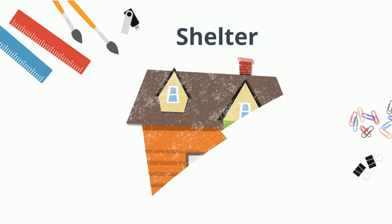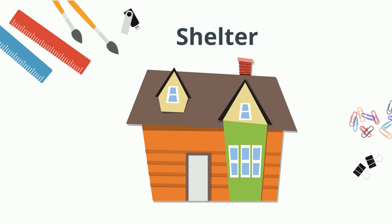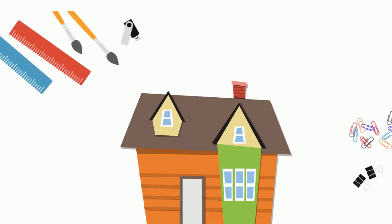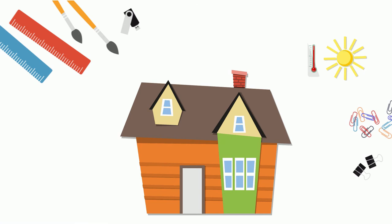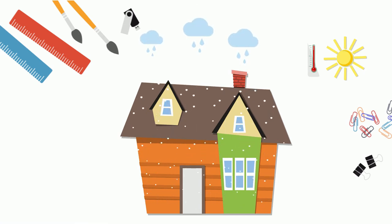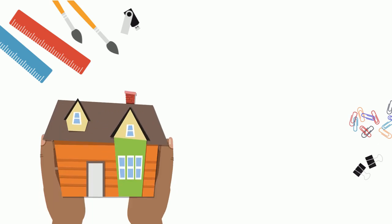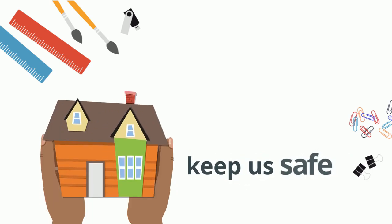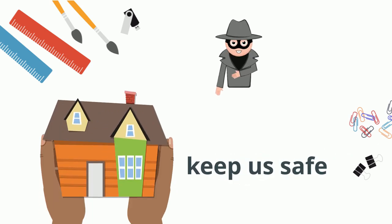Therefore it is important to eat a little from each group every day. Shelter: we need houses to live, which give us shelter and safety from hot, cold, and rainy weather. They also keep us safe from thieves and other dangerous people and animals.